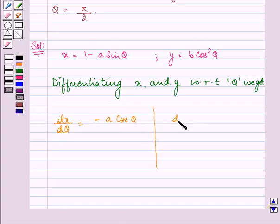And dy by d theta is equal to minus 2b, and derivative of cos theta is minus sine theta, so we have 2b cos theta sine theta. Now by chain rule.